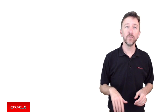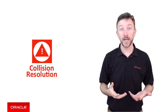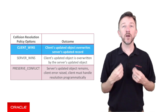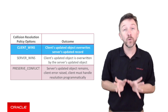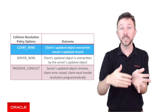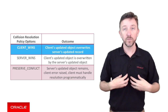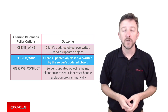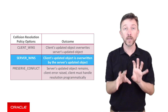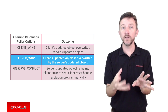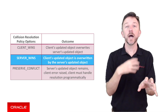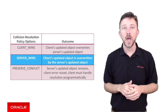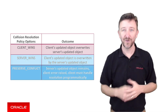The conflict resolution policy deals with what occurs on the server side when a mobile application updates data. The client wins option says that if, since downloading an object and allowing a user to update it, another mobile user or MCS has also updated that object on the server, your client's update will override the server copy. Conversely, the server wins option means in the same scenario, your local update is thrown away and the most recent server-updated object is used instead.